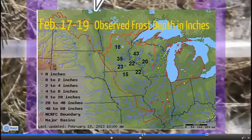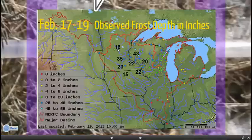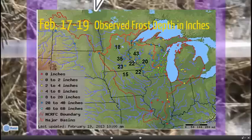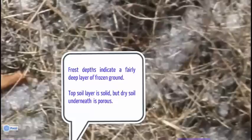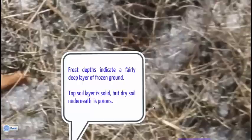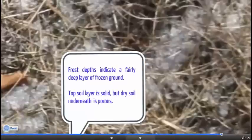Now let's talk about frost depths — just looking at how deep the soil is below freezing. We see quite a range: 18 inches up in Long Prairie, ranging to 43 inches in Bloomer, Wisconsin, but most areas are looking at 2 to 3 feet of frost depth. One interesting thing about frost depth in this situation is that the top layer is solid frozen with concrete frost, but underneath, even though that layer is below freezing, it's dry. That means it's porous and will allow water to move through it before refreezing. How that water moves through the soil column — whether it refreezes or continues through — is an interesting element to monitor as we go through the spring thaw.